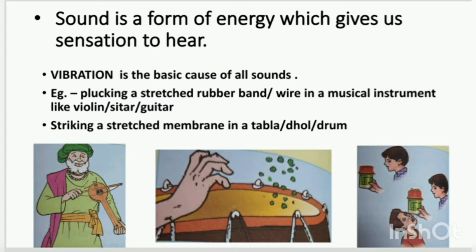For example, in musical instruments — all the stringed musical instruments which have a metal wire, like violin, sitar, and guitar — if we pluck that metal string, it will vibrate and that musical instrument will start producing a sound. Similarly, if you pluck a stretched rubber band, it will also start vibrating to and fro.